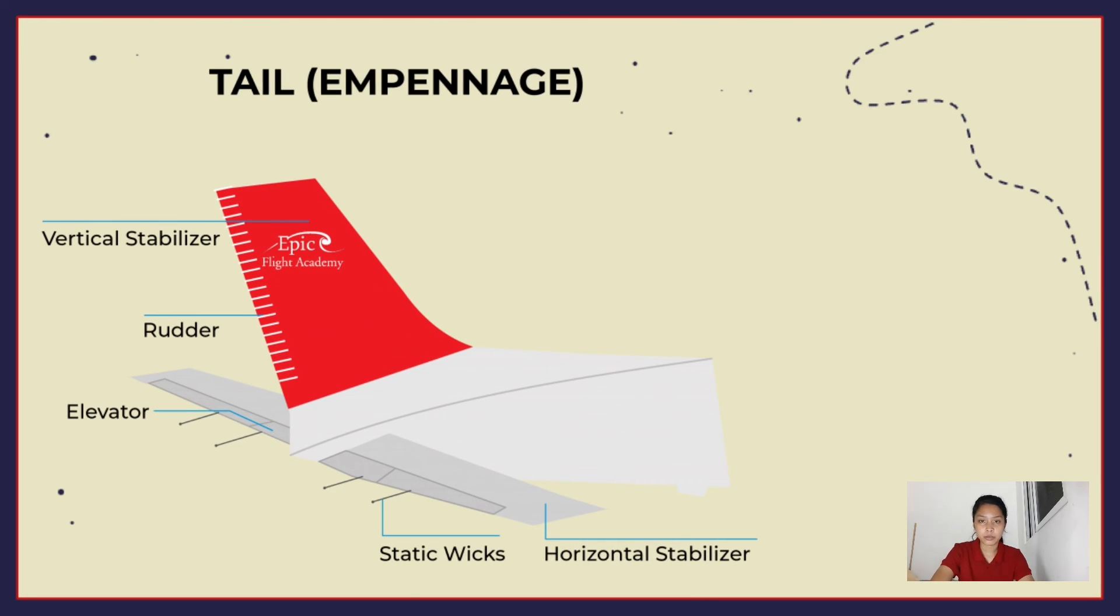The empennage includes the entire tail group and consists of fixed surfaces such as the vertical stabilizer and the horizontal stabilizer. The movable surfaces include the rudder, the elevator, and one or more trim tabs.